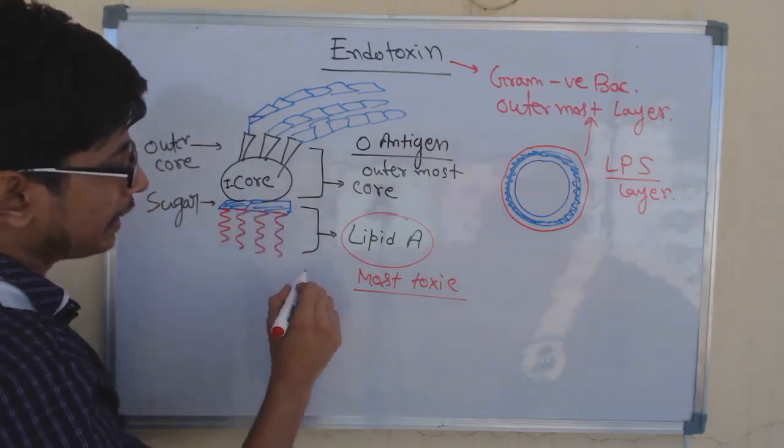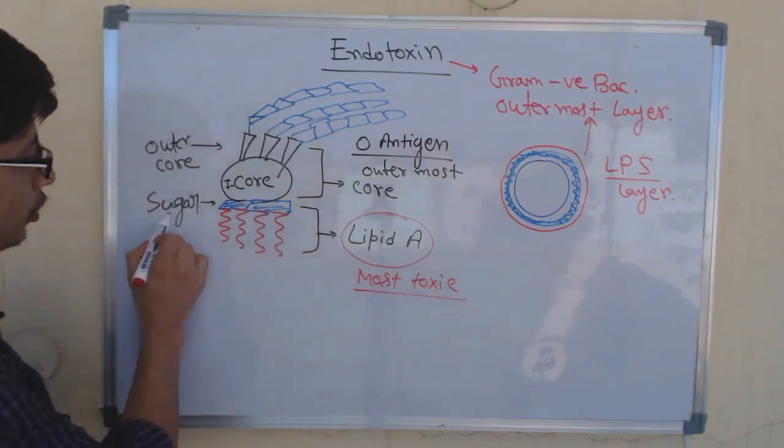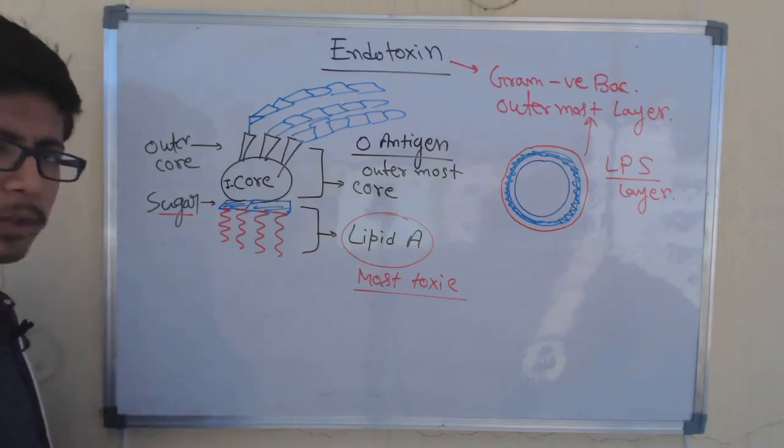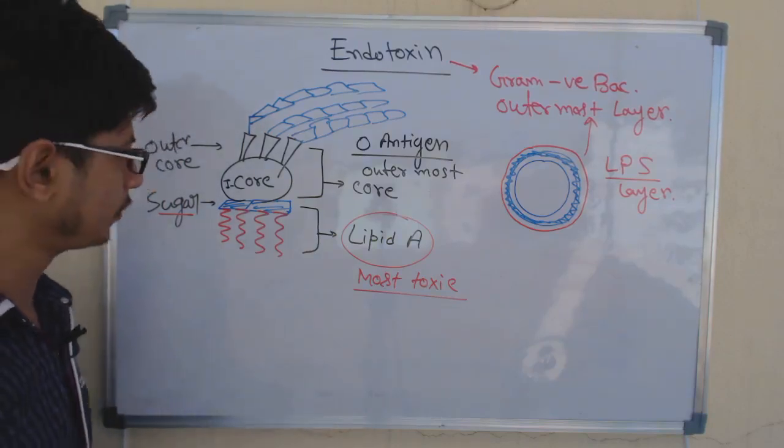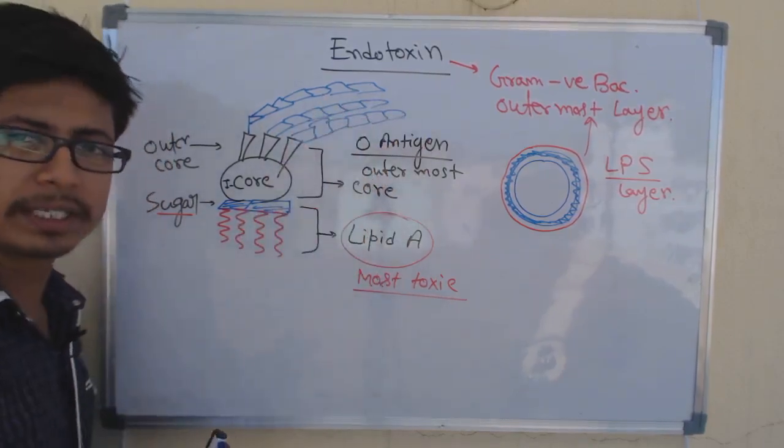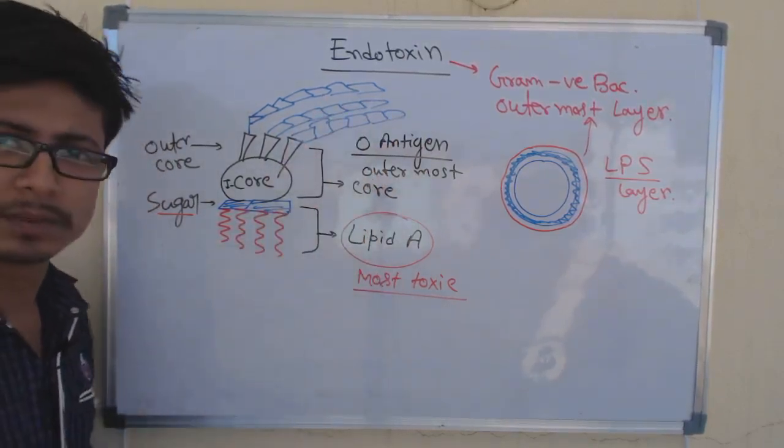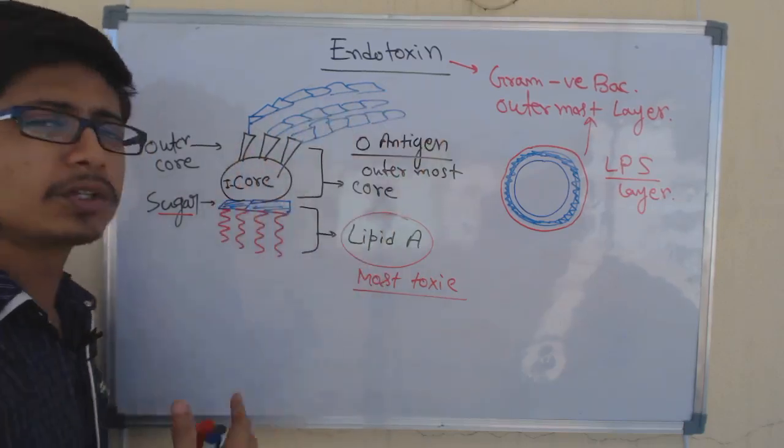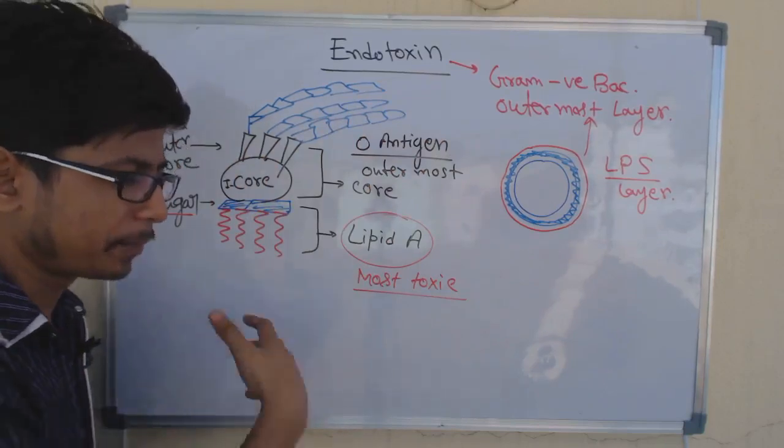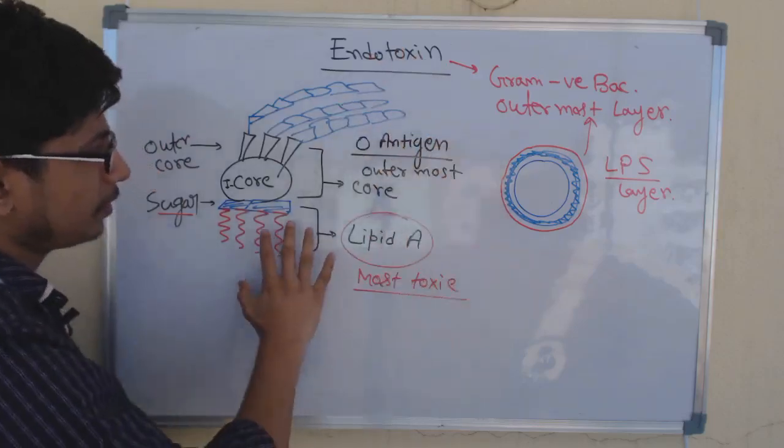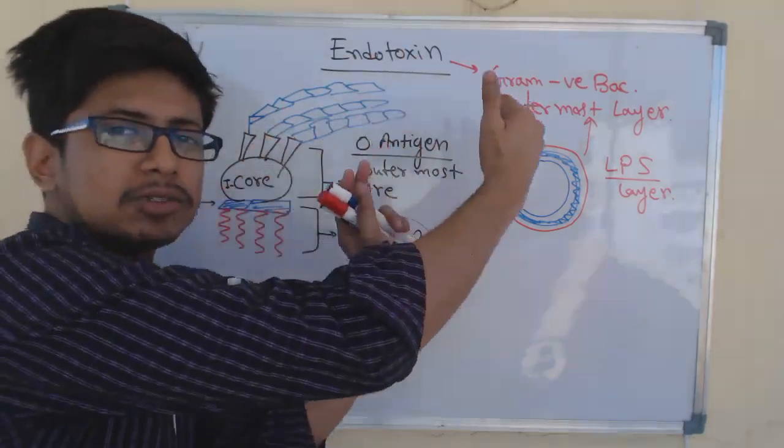This lipid A consists of sugar moiety and then lipid molecules attached to it. The sugar moiety is normally glucosamine, phosphorylated glucosamine. While these O antigens are also nothing but different types of sugar molecules that are available—different types of sugar. The core is also made mostly with sugar like heptose, which is an example of sugar present in the core. Most of the parts that are facing outside are made with sugar—heptose or modified sugar, phosphorylated sugar that are present.